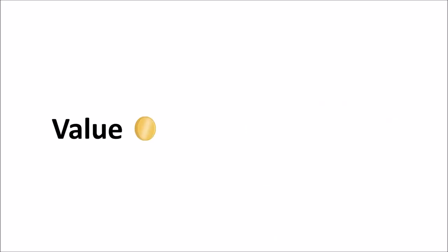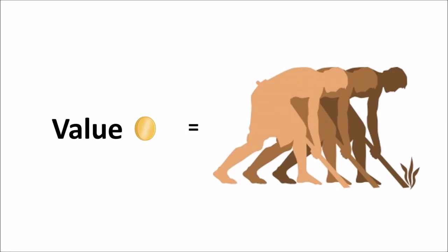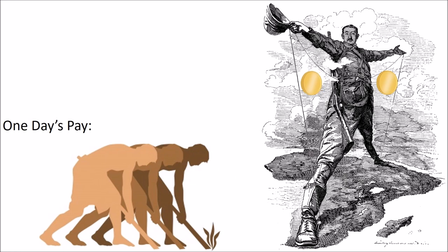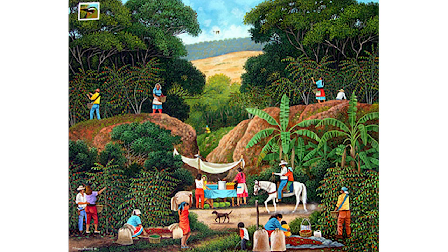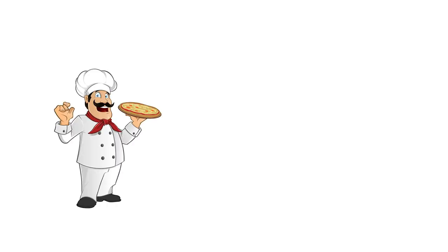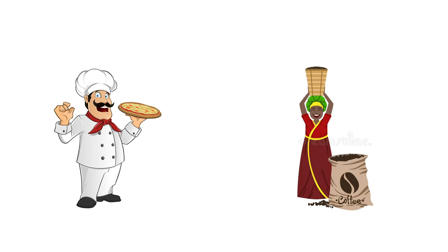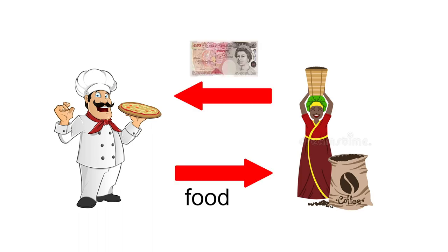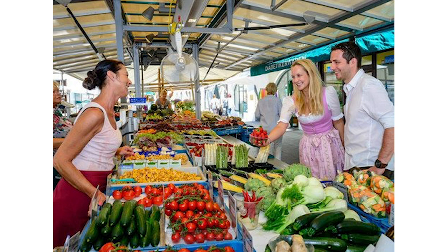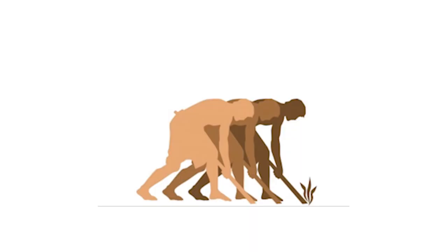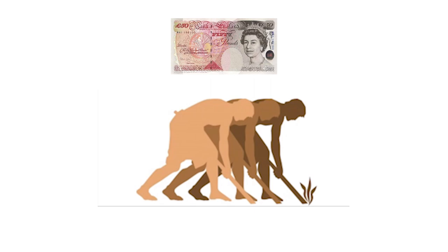Lesson three: The value of the script was determined by the amount of work the British required to earn it. For example, if the British gave workers one coin for one day of work, the coin would be worth one day of work. Assuming the only way to get script was to grow coffee, some people would have to get script through other means. If a chef wanted script, he'd have to sell food to someone who earned it growing coffee. Those two people would come to a mutual agreement about the price — what today we call market forces — and in this case the price would be based on how hard one has to work to get script from the British.